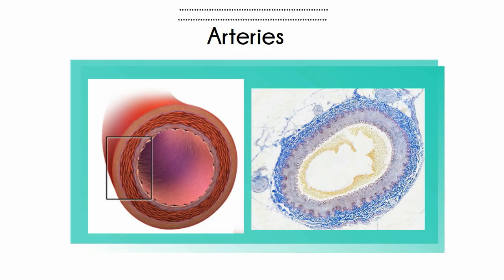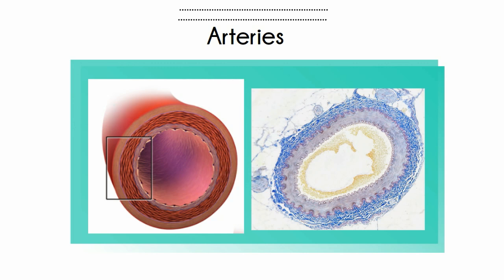Arteries have three main layers: an outer layer of connective tissue, a middle layer of smooth muscle, and a very thin layer of endothelial cells. Blood flows through the arteries under high pressure, and arteries do not have valves.